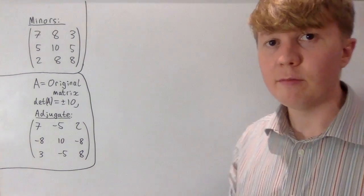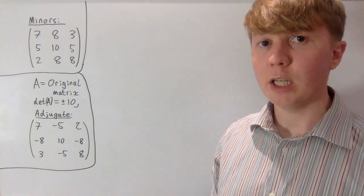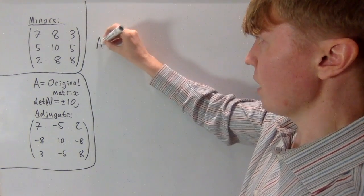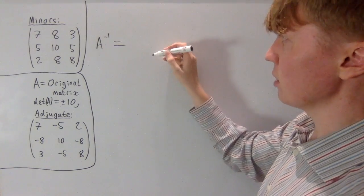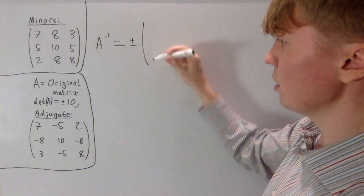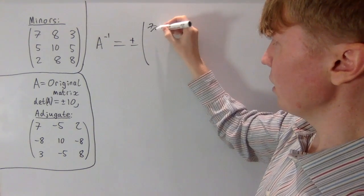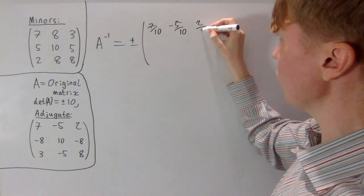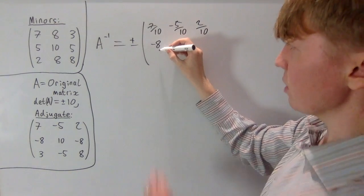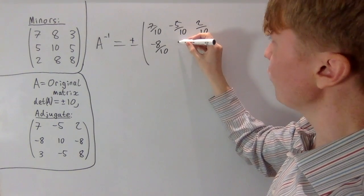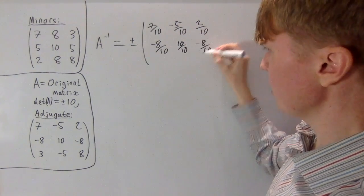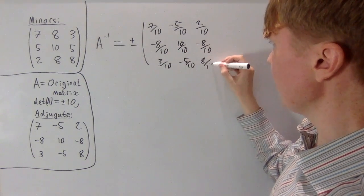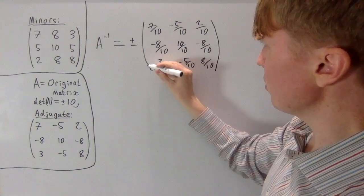To find A inverse, we just need to divide the adjugate through by the determinant of A. So we divide by plus or minus 10. This tells us that A inverse is going to be plus or minus: 7 tenths, minus 5 over 10, minus 8 tenths, 10 tenths, minus 8 tenths, 3 tenths, minus 5 tenths, and 8 tenths — written as fractions over 10.